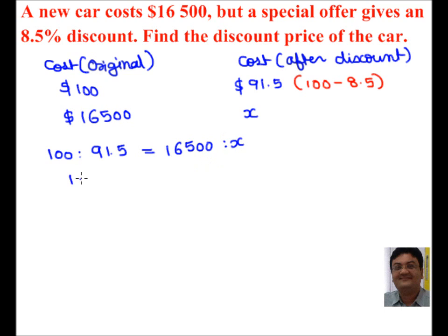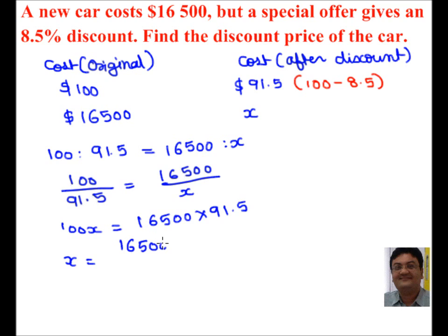Which means 100x equals 16,500 times 91.5. So simplifying this further, I get x equals 16,500 times 91.5 over 100.